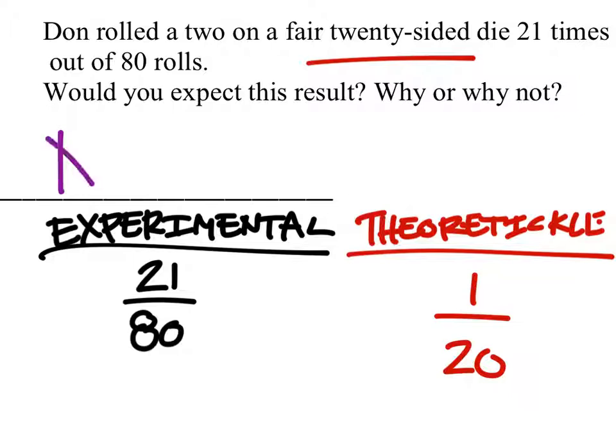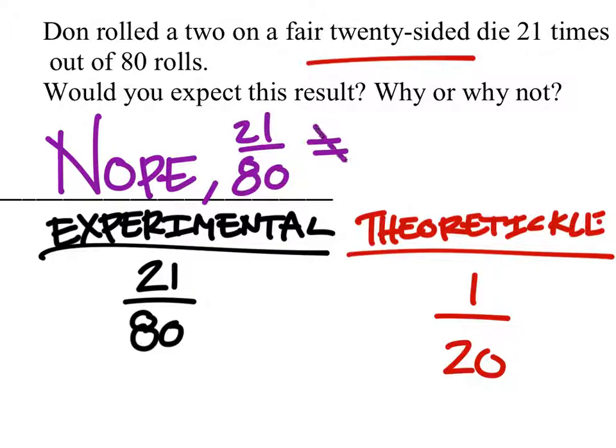The answer is nope. And the reason why is because 21 over 80 is not even close to 1 over 20.